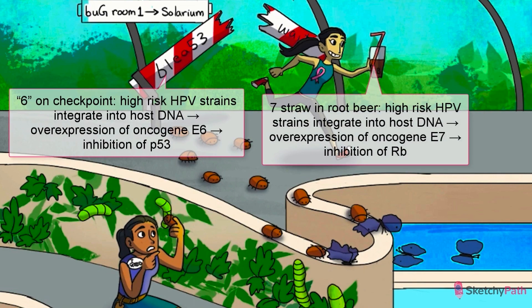After integrating into the genome, high risk HPV strains upregulate the production of two inhibitory proteins. E6, which blocks P53 — hence the flipped over number 6 there. And then there's E7, which inhibits RB, emphasized by that 7-shaped straw in the root beer glass. By blocking these tumor suppressor genes, HPV kicks cell replication into hyperdrive, causing uncontrolled growth and, eventually, cancer.